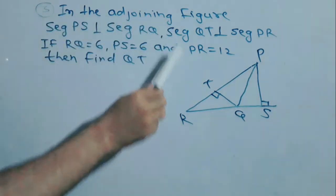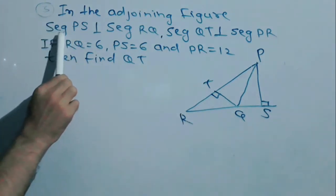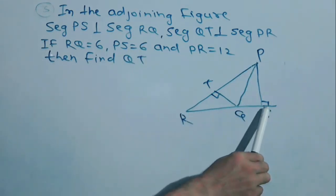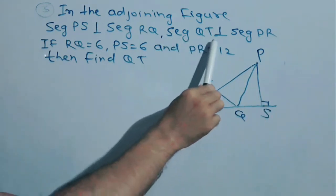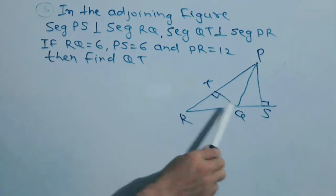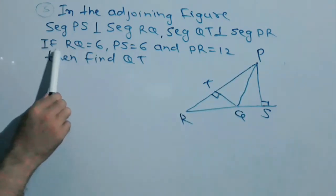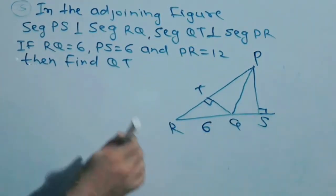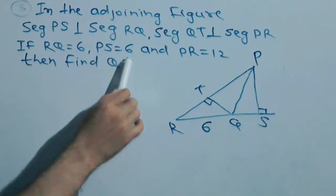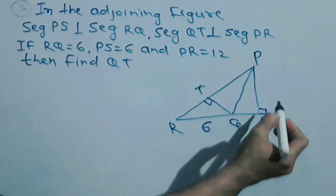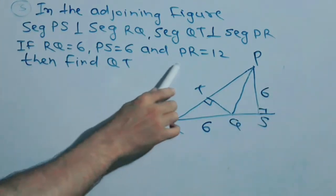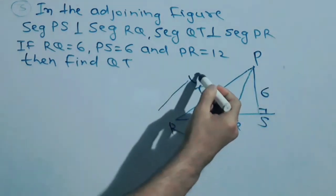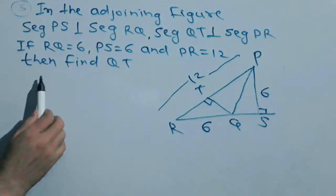In the adjoining figure, segment PS is perpendicular to segment RQ. If RQ is equal to 6, PS is equal to 6, and PR is equal to 12, then find QT.